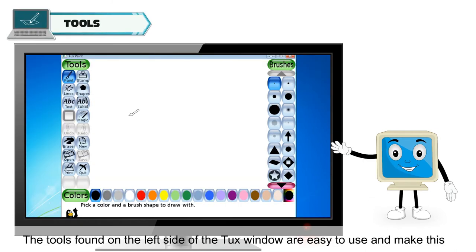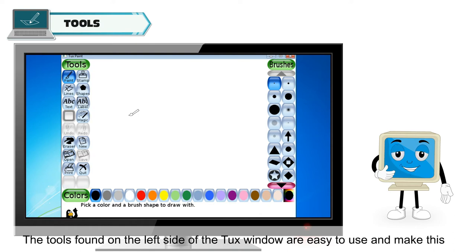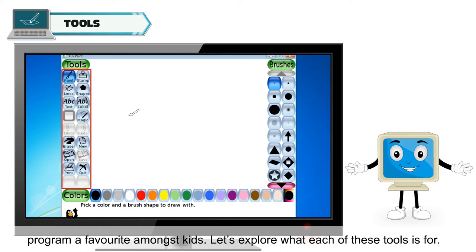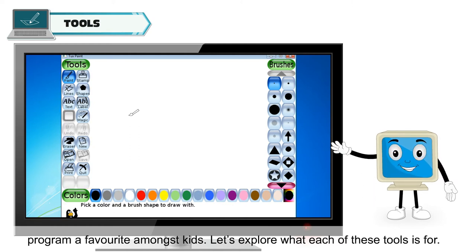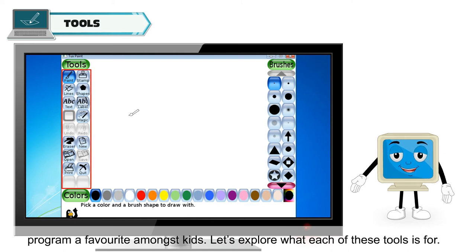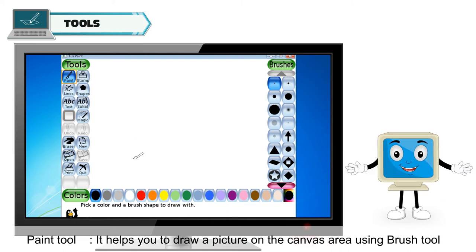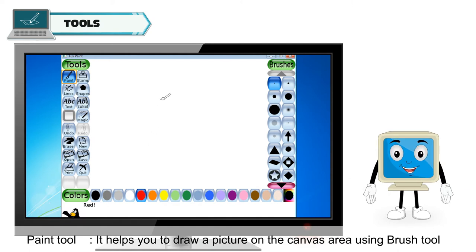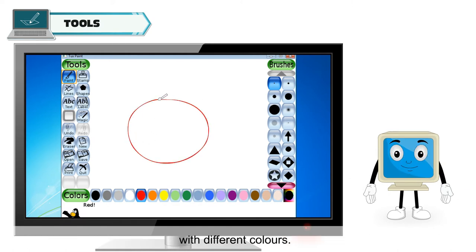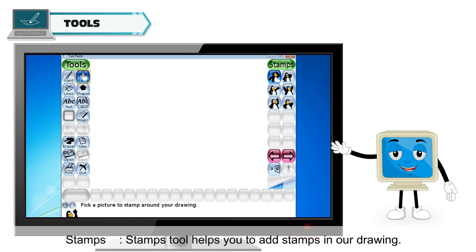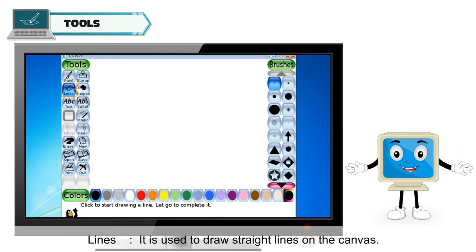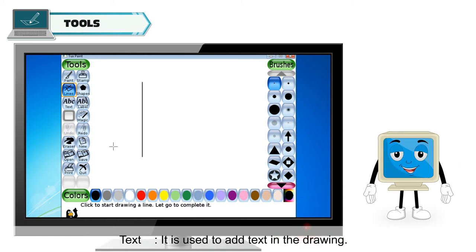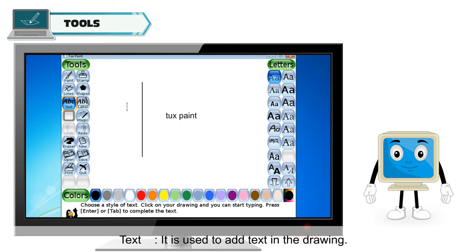The tools found on the left side of the Tux Paint window are easy to use and make this program a favorite amongst kids. Let's explore what each of these tools is for. The Paint tool helps you to draw a picture on the canvas area using the Brush tool with different colors. The Stamps tool helps you to add stamps in your drawing. The Lines tool is used to draw straight lines on the canvas. The Text tool is used to add text in the drawing.